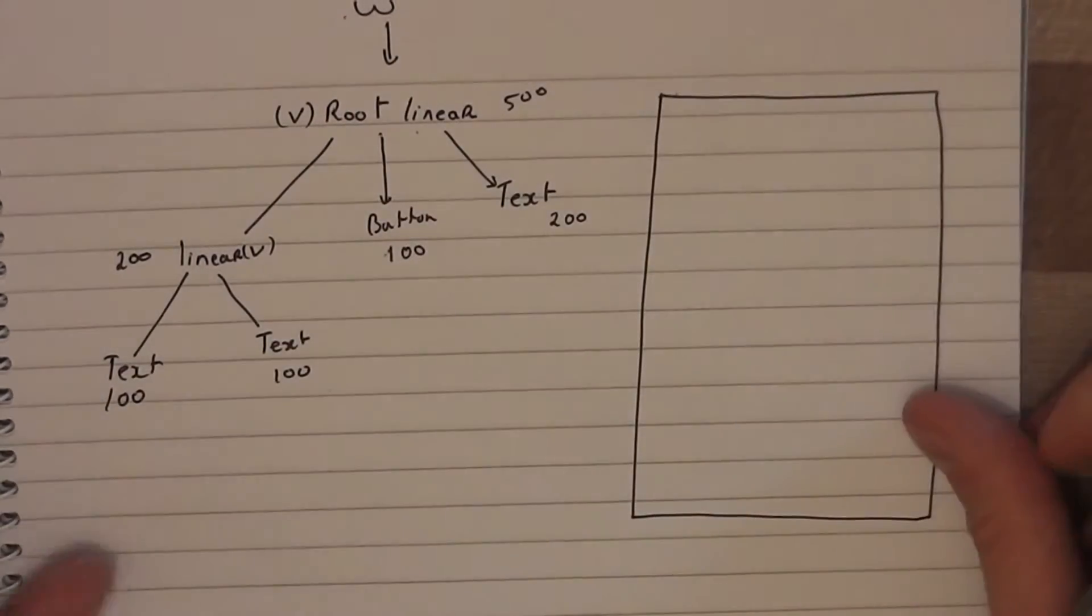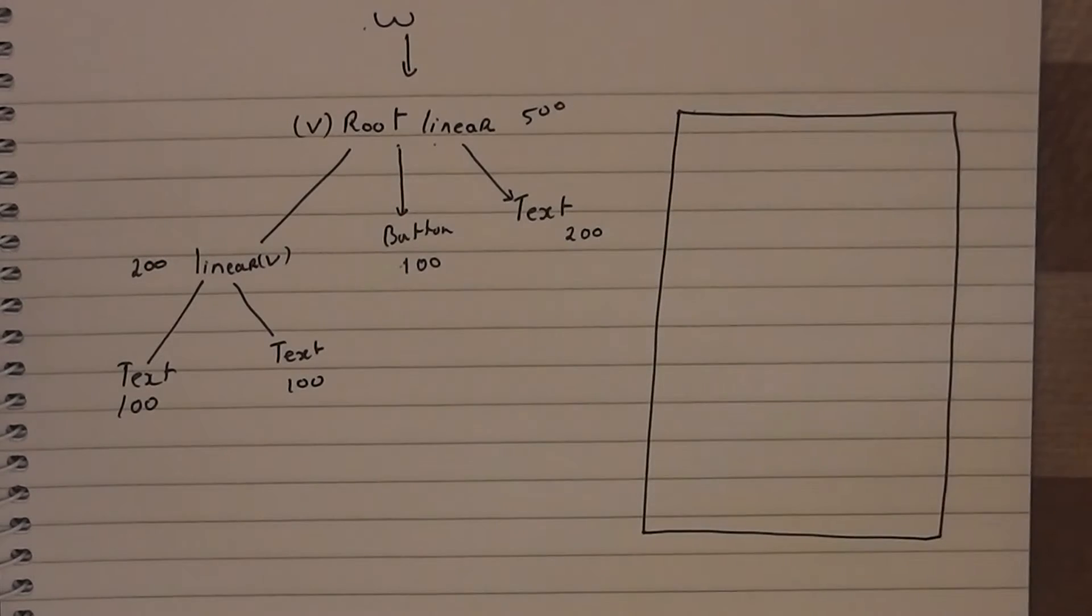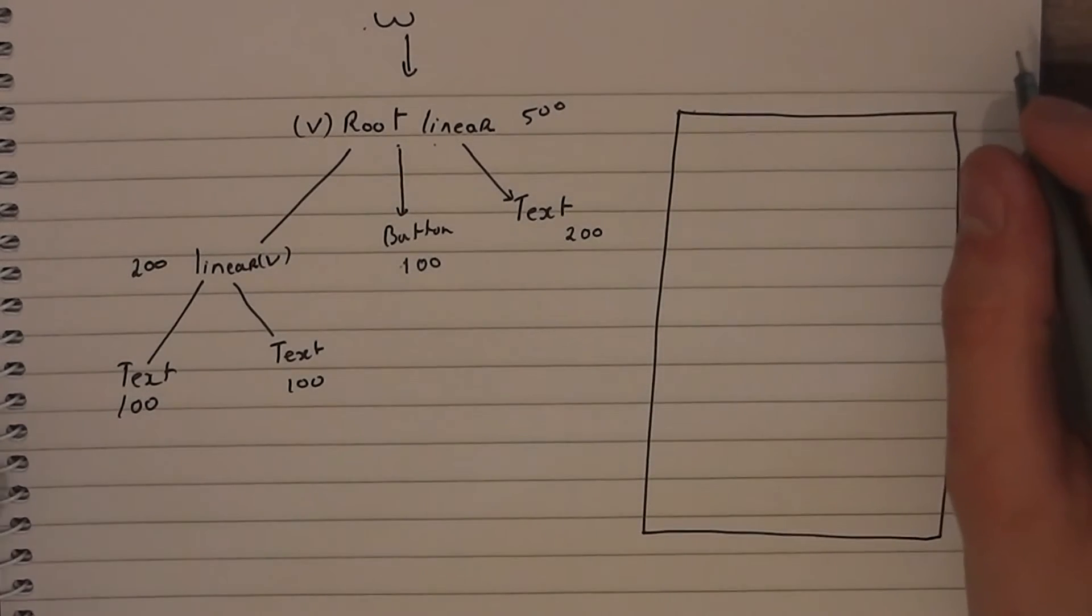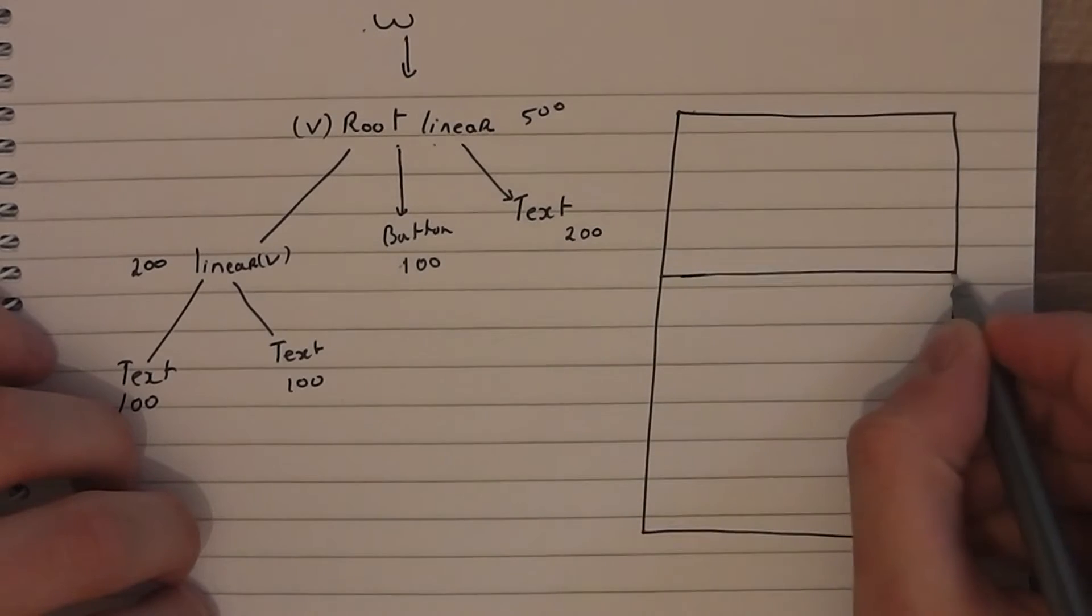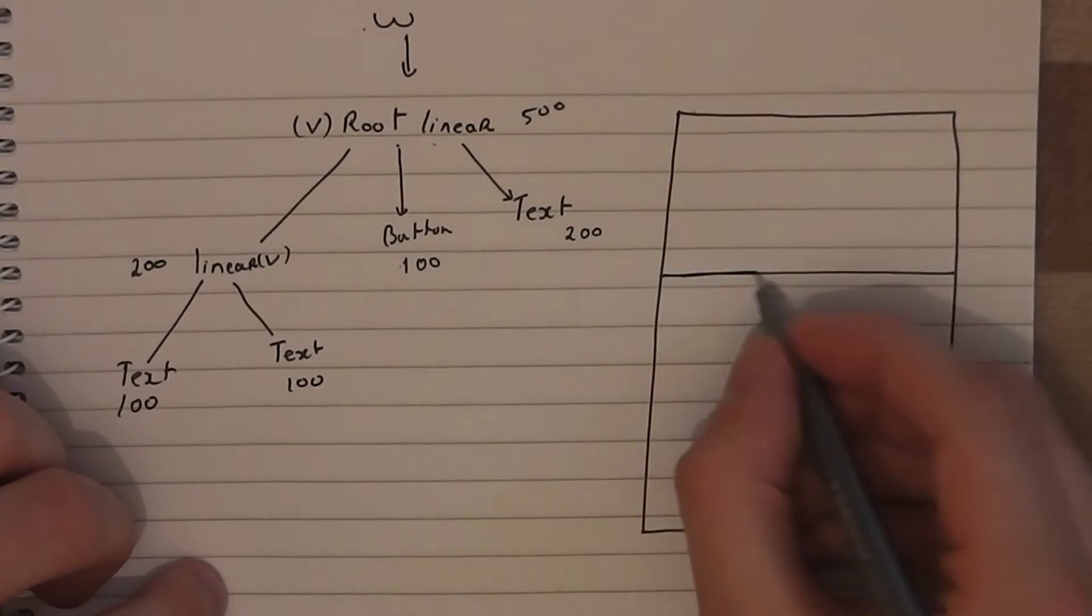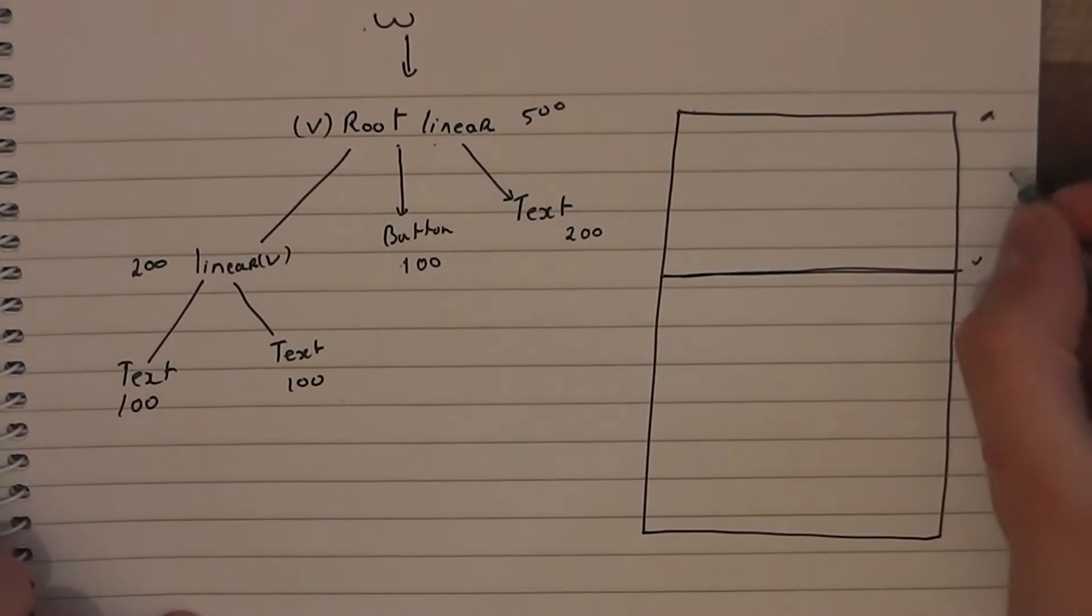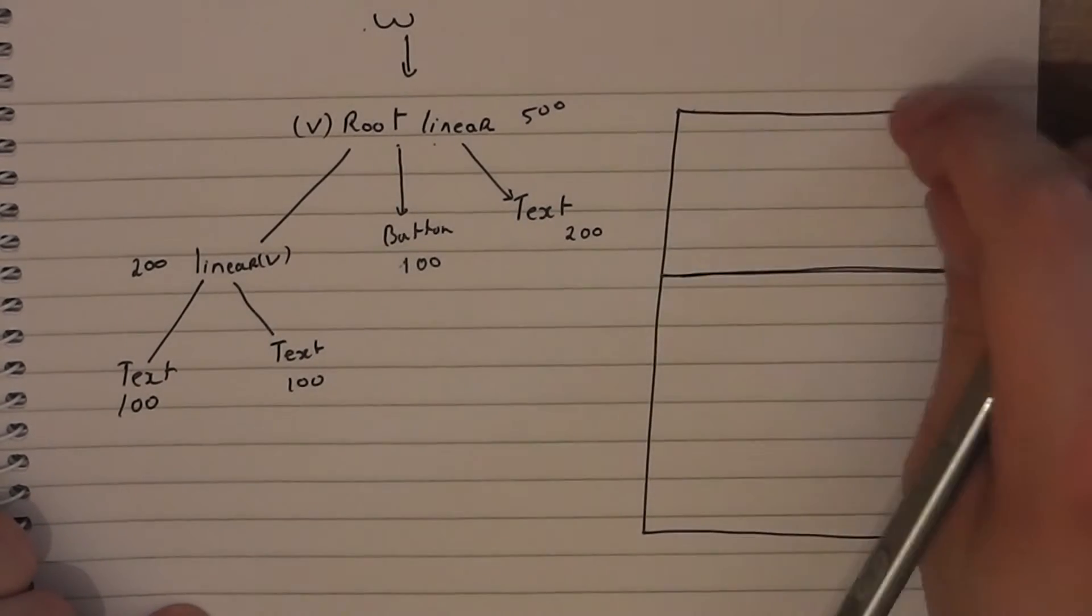So our window, W for window, now says I know you're 500 high. I'm giving you these 500 pixels here. We're assuming everything is just max width. So there's 500 pixels for you. And that's the frame for that layout.